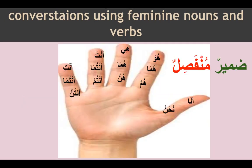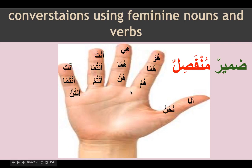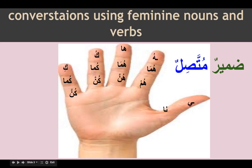As usual before we proceed, we are going to practice our pronouns. These are damirun munfasilun — detached pronouns. These are the marfu forms of pronouns, which come as mubtada most of the time in jumlatul ismiya. They are: huwa, huma, hum, hiya, huma, hunna, anta, antuma, antum, anti, antuma, antunna, ana, nahnu.